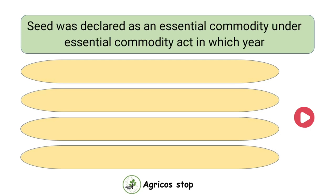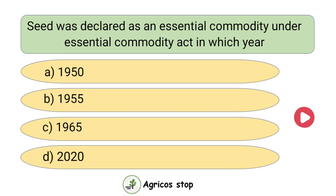Seed was declared as an essential commodity under the Essential Commodity Act in which year? Options are 1950, 1955, 1965, and 2020. The answer is 1955. Seed was declared as an essential commodity under the Essential Commodity Act in 1955.